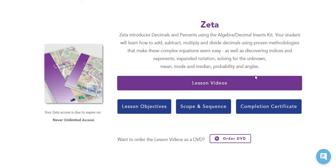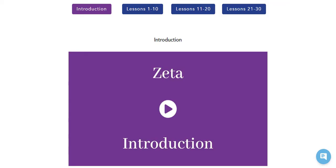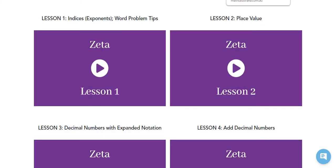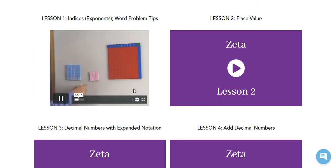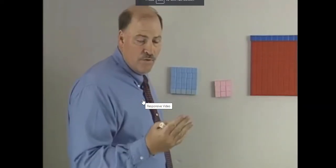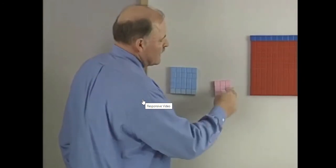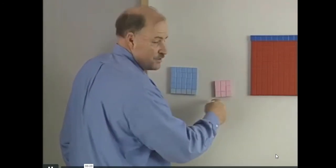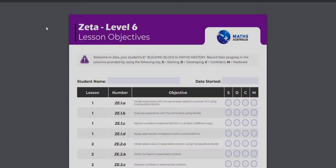Then I can see Epsilon and Zeta. Let's have a look at the contents of Zeta. We've got lesson videos, the lesson objectives, scope and sequence, and also a completion certificate. The lesson videos are the big draw card — we have an introduction to the level and then we can choose which group of lessons to access. They're all embedded and labeled really clearly; you just click it to play, and I can also make it full screen.